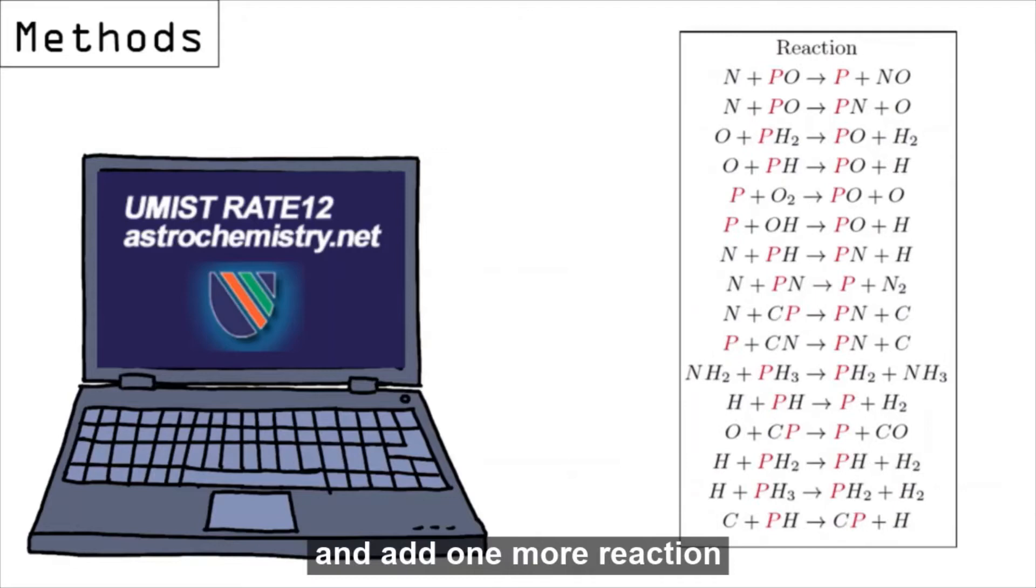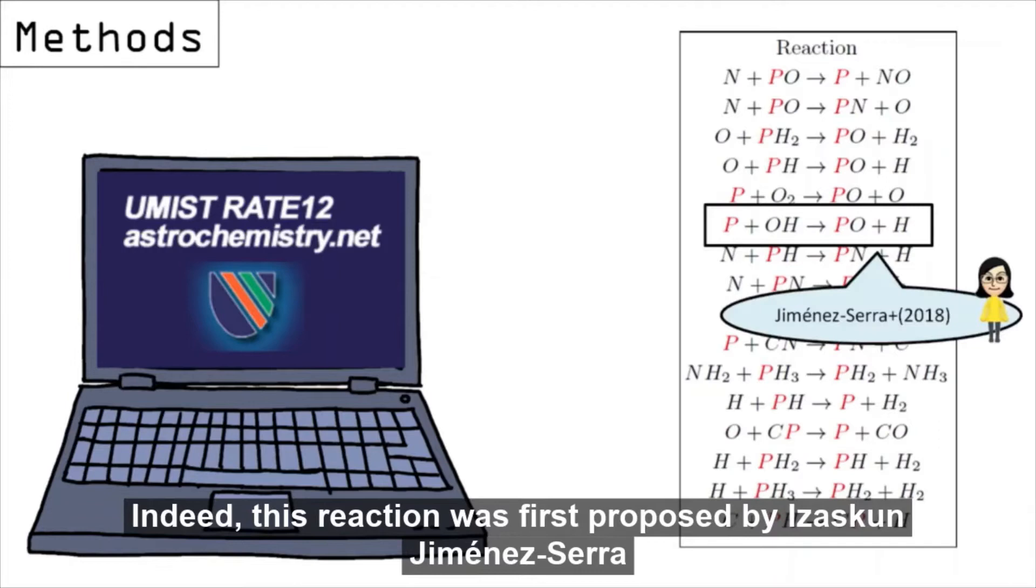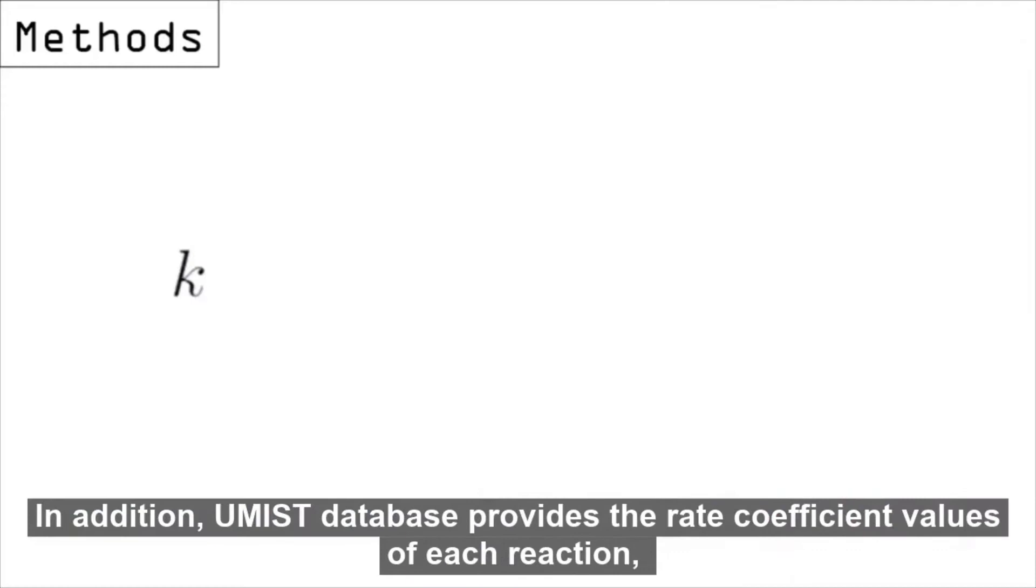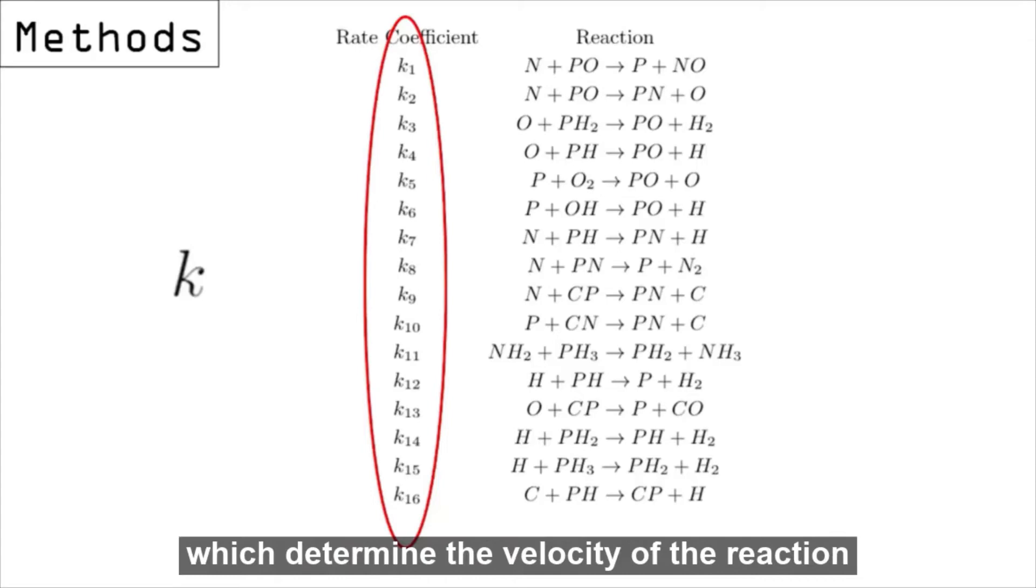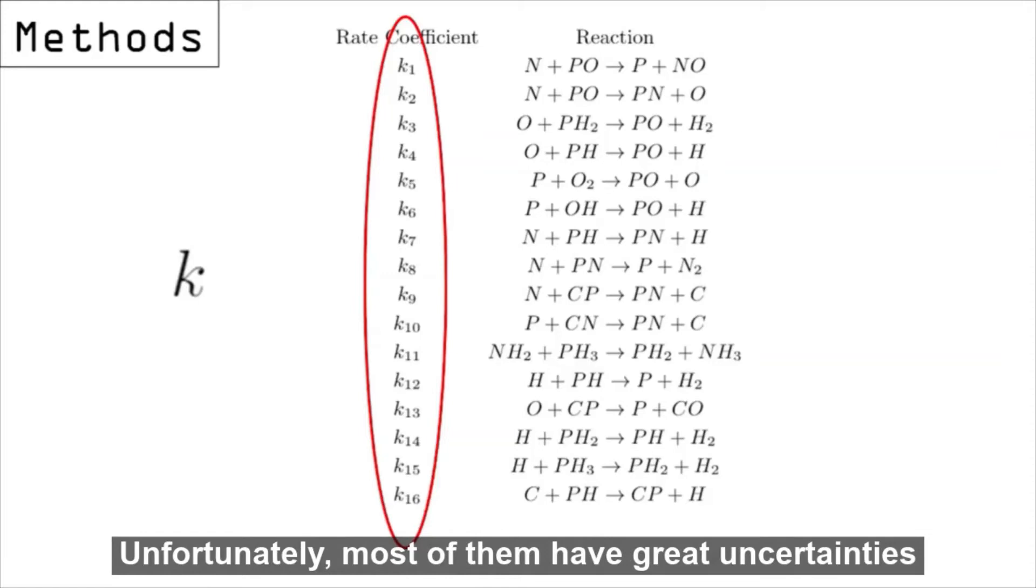Indeed, this reaction was first proposed by Izaskun Jiménez Serra, and, as we will see, plays a key role in our research. In addition, UMIST database provides the rate coefficient values of each reaction, which determine the velocity of the reaction, and will be represented with letter K. Unfortunately, most of them have great uncertainties, because they are difficult to measure experimentally.